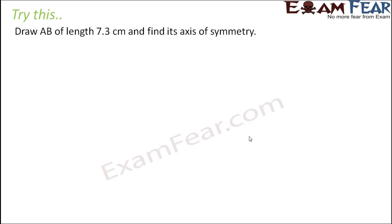Let's look at this one. Draw AB of length 7.3 centimeters and find its axis of symmetry. The axis of symmetry for a line segment is that line along which if you divide the entire line segment into two halves, the two halves would be identical and they would be mirror images of each other — they would cover each other completely when overlapped. This proves that the axis of symmetry must divide the line segment into two equal halves.